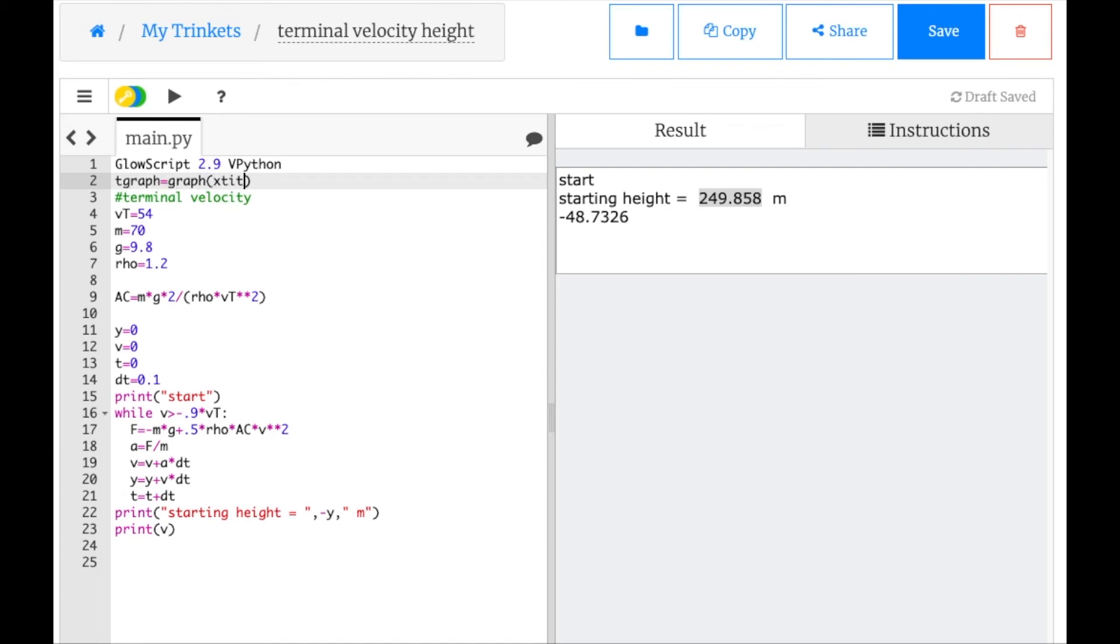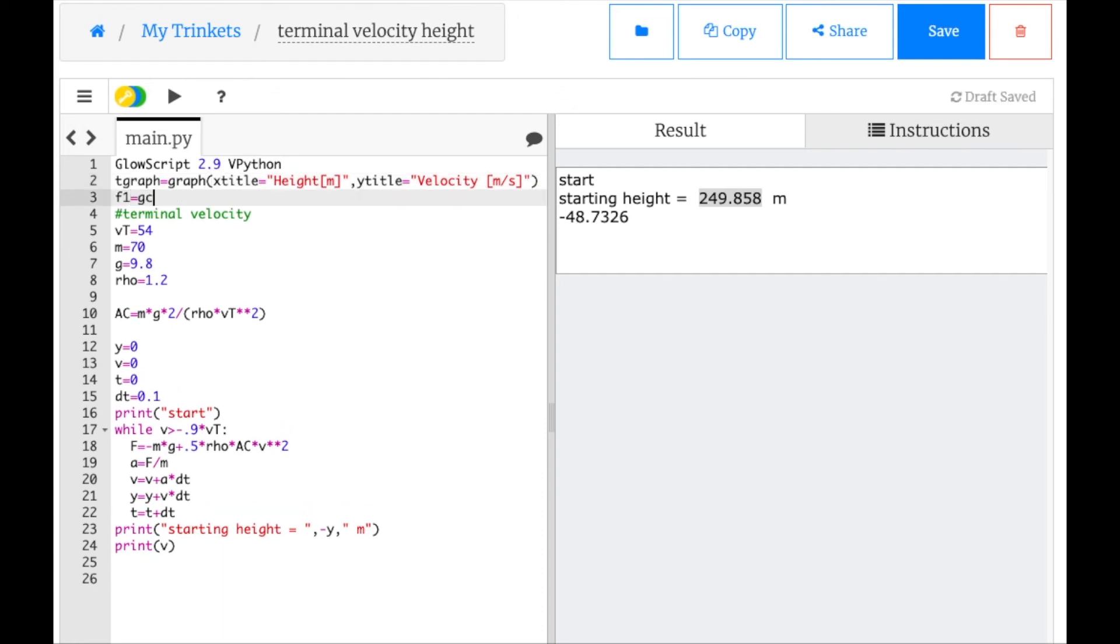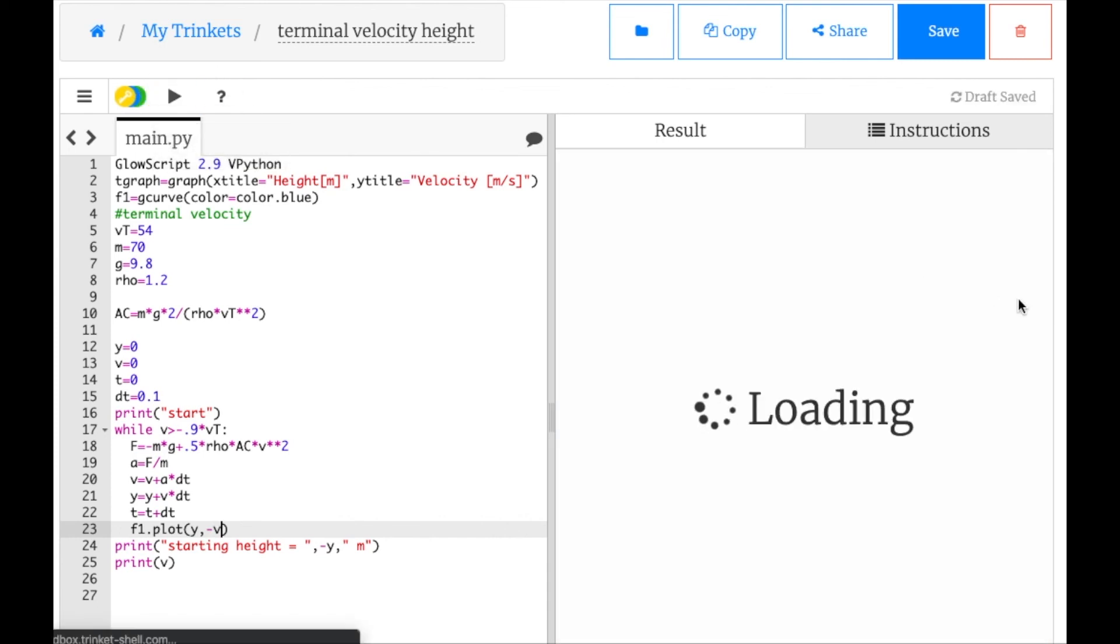T graph equals graph. The x title is going to be title equals, let's do height. In meters. And then the y title is going to be equal to the velocity in meters per second. So this will be a nice thing to graph so that we can see what's happening. And then I can say f1 equals g curve, color, color.blue. And then down here I'm going to plot, f1.plot. So I want to plot the negative y. Because I want to plot, well I guess it should still be y. Let's just put it as y. That's fine. And then I want the positive velocity. I want to see how fast they're going so I'm going to say negative v. So let's see how that looks.